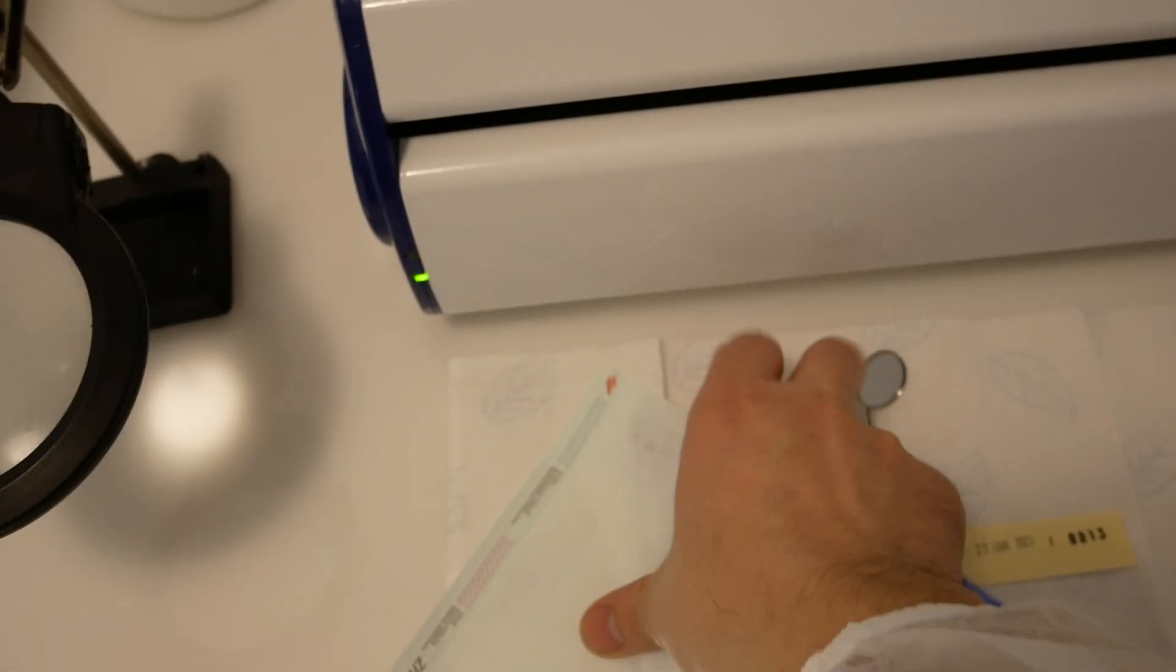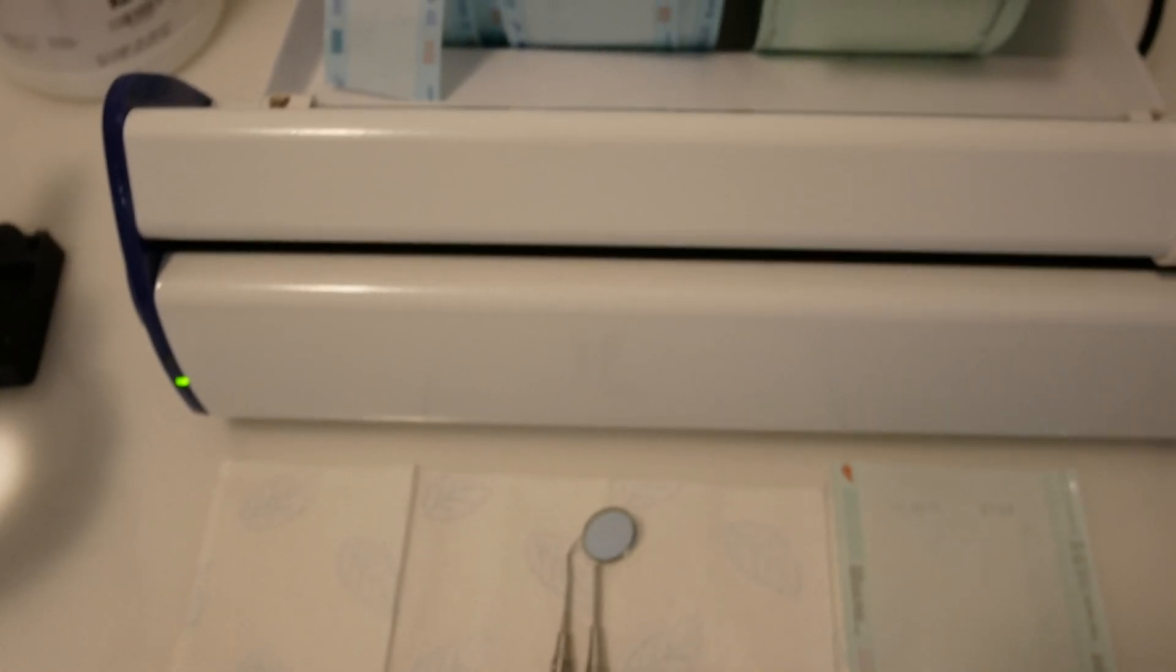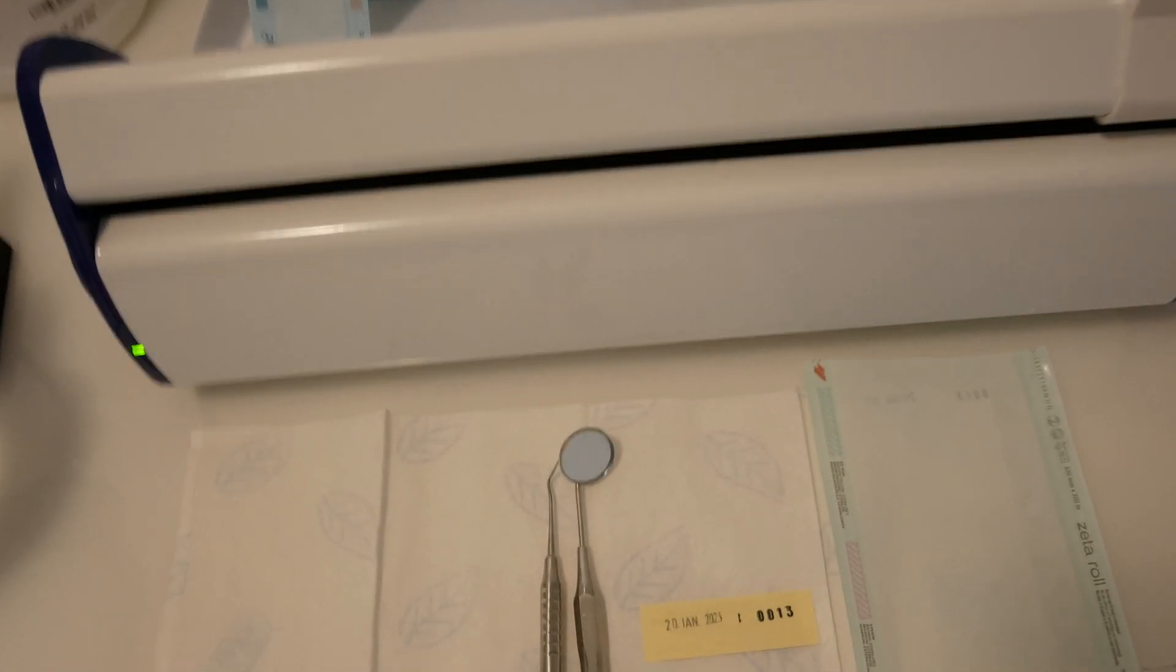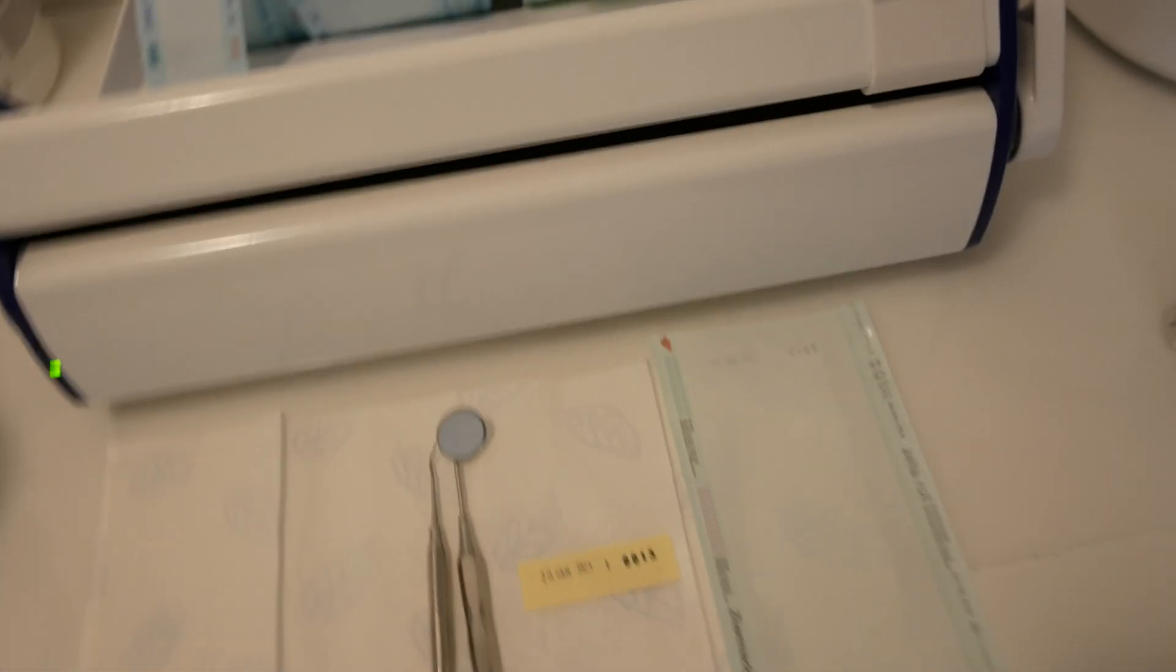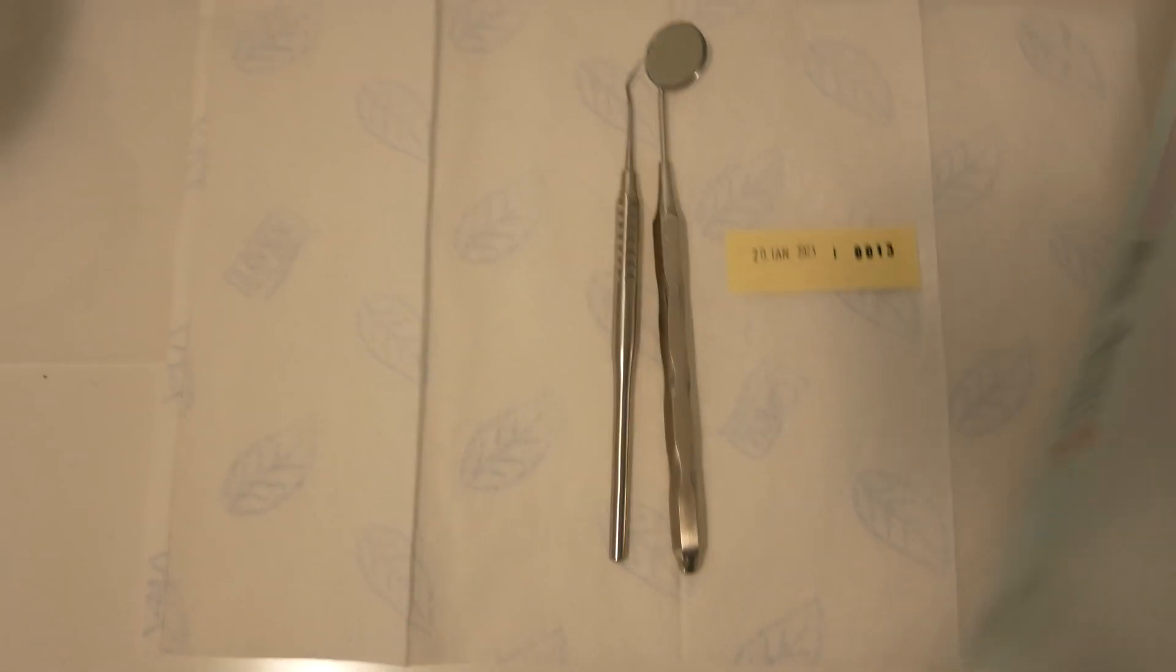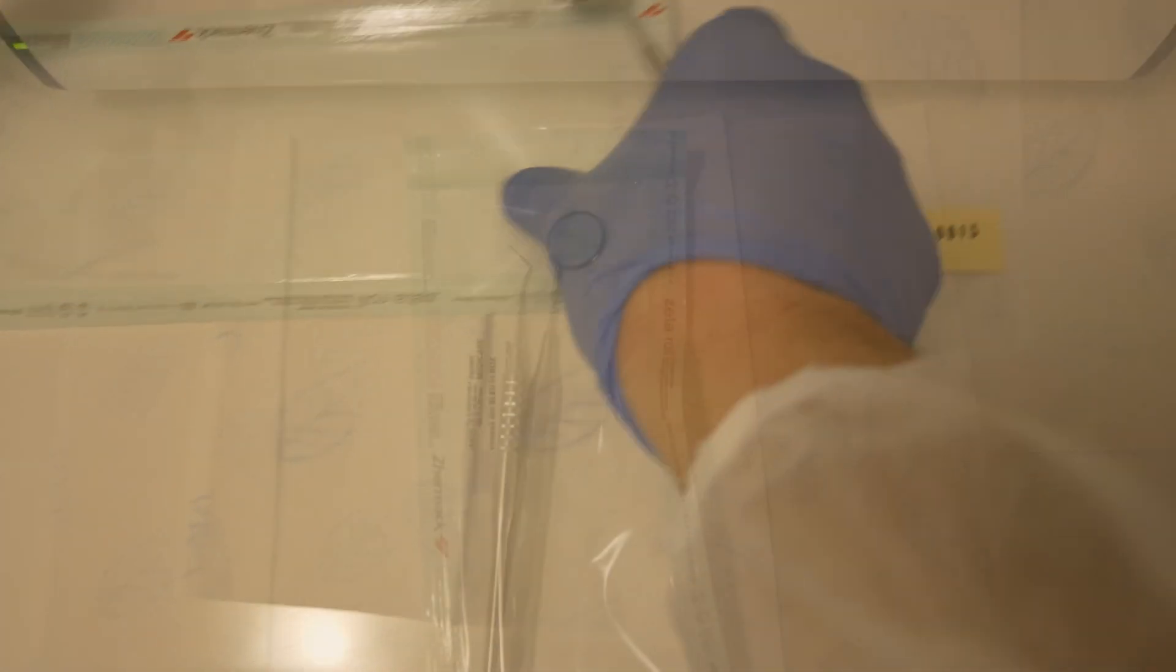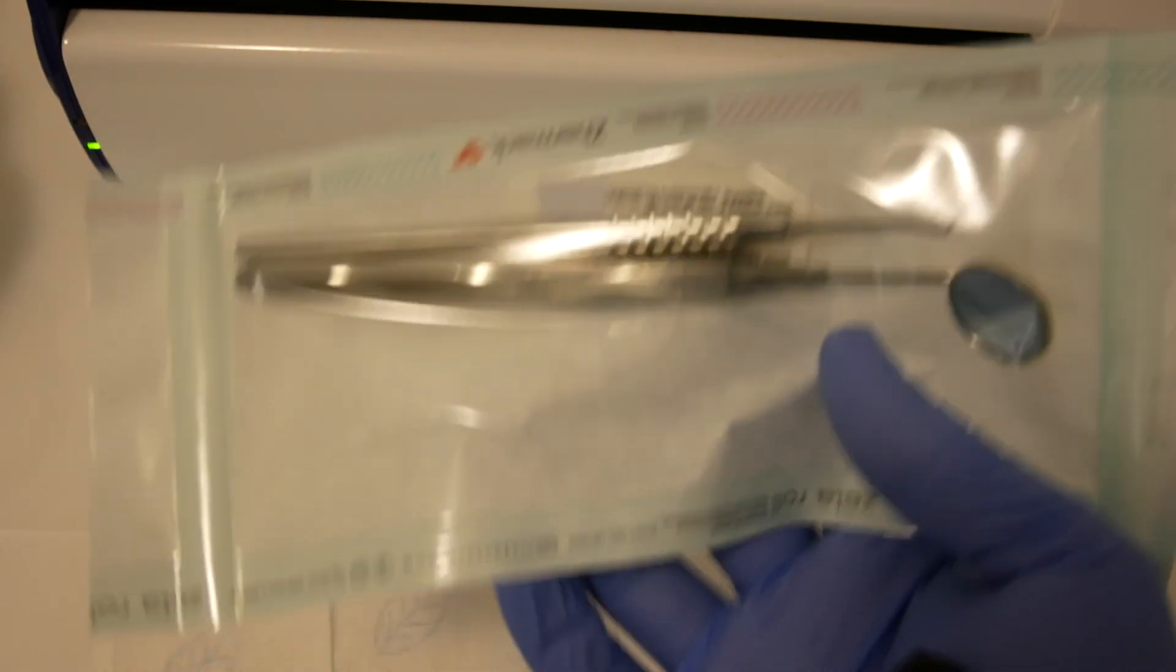As you can see, I have my pouch pre-sealed at one end. I do this before starting to process the instruments as I find this easier. Of course, without filming, this is a lot easier. So I place my instruments in the bag. Okay, so we seal the bag with the class 5 indicator strip inside.